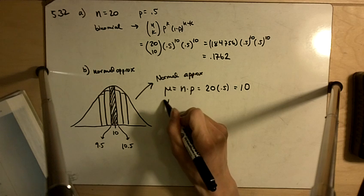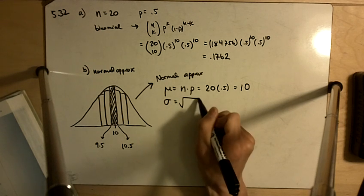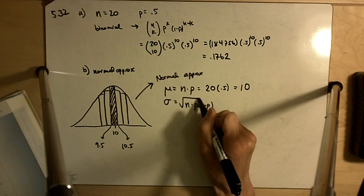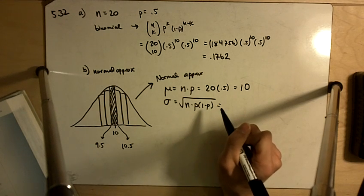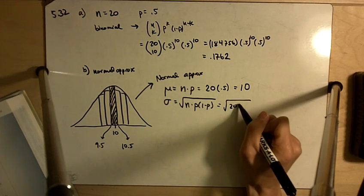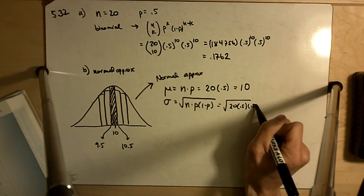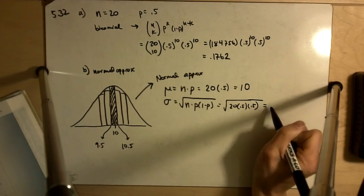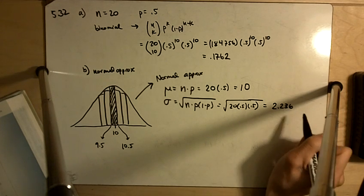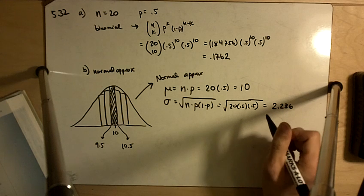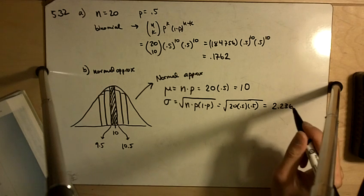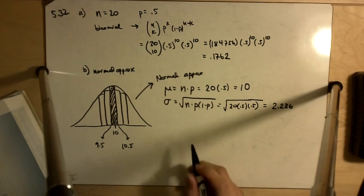And standard deviation is going to be the square root of n times p times 1 minus p. So that is going to be the square root of 20 times 0.5 times 0.5, which is basically the square root of 5, which is 2.236.